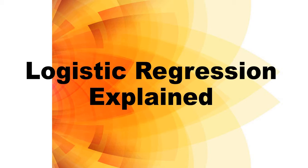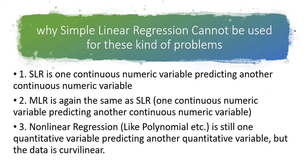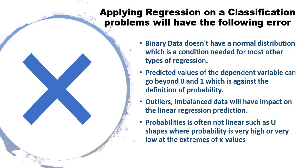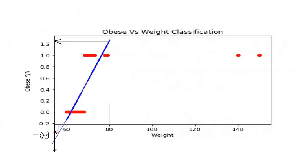In my prior video I explained why simple linear regression cannot be used for classification problems. Applying regression on a classification problem produces errors: binary data does not have a normal distribution, the predicted value of the dependent variable can go beyond 0 and 1 which violates probability rules, and outliers and imbalanced datasets impact linear regression predictions, including U-shaped probability issues at extreme ends.